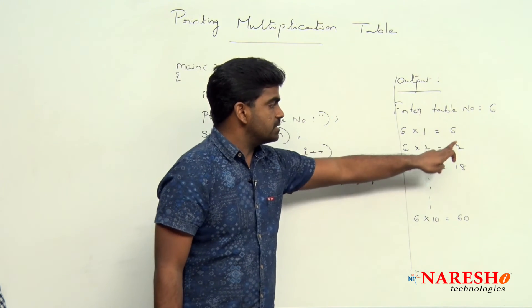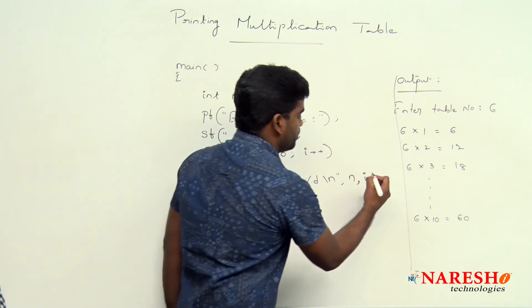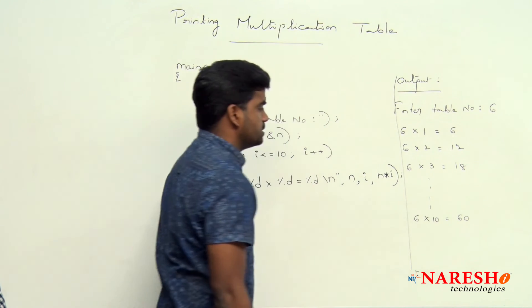And next in the third place, the multiplied value we have to write: 6, 12, 18, 24, 30 like this. So that is n multiplied with i value we need to display. Simple.